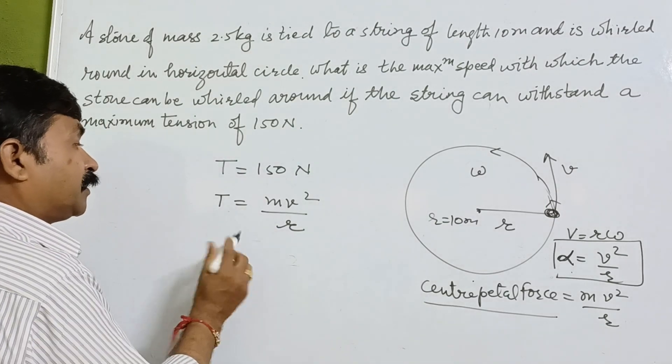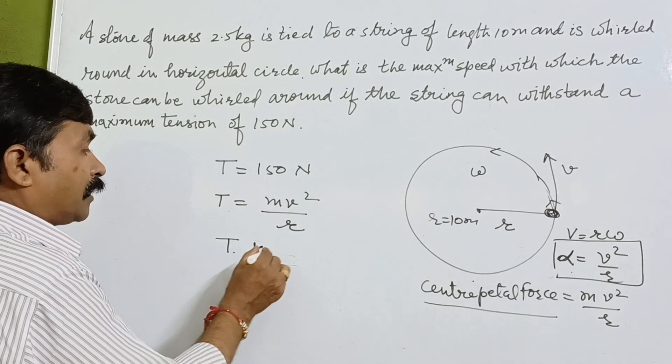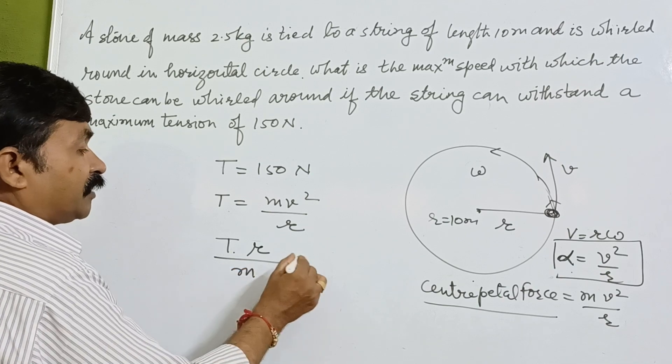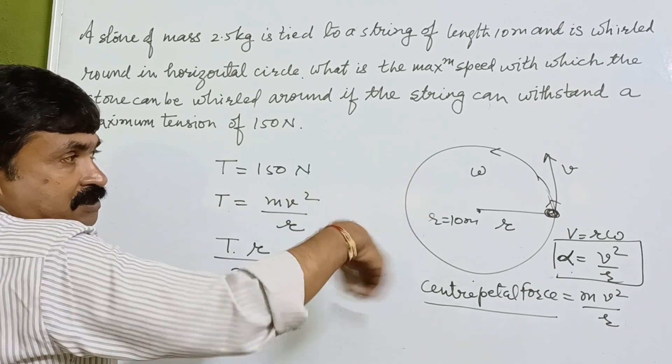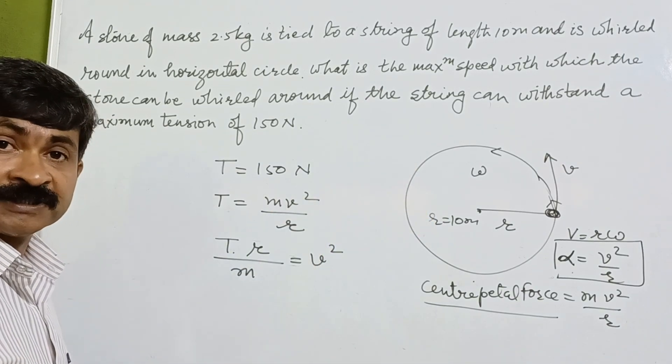So here, T maximum into r upon m will give the velocity of this particle which is moving in the circular path.